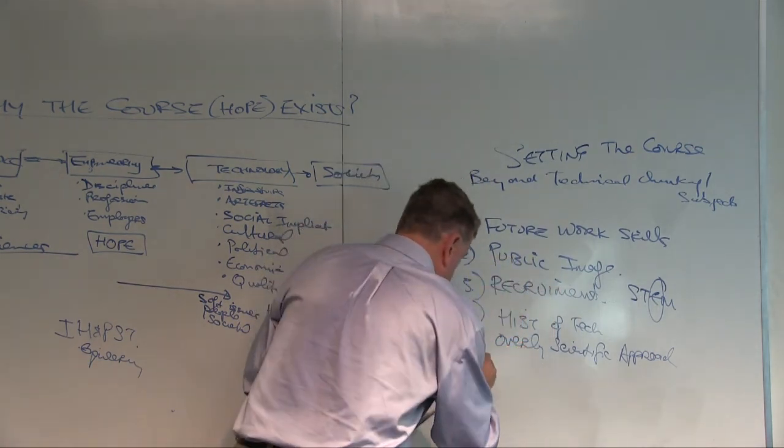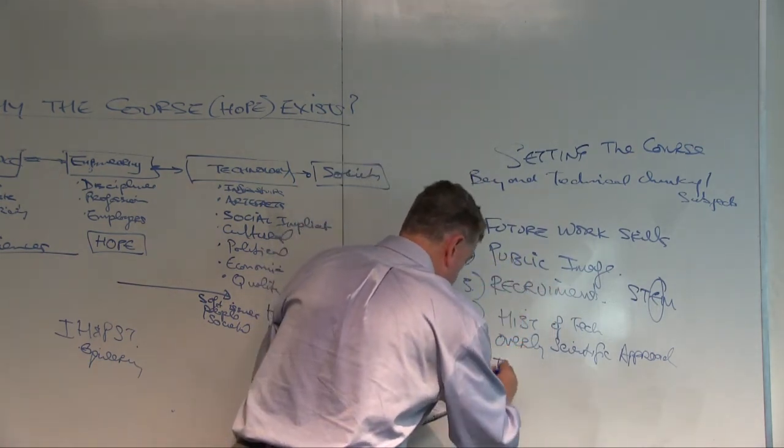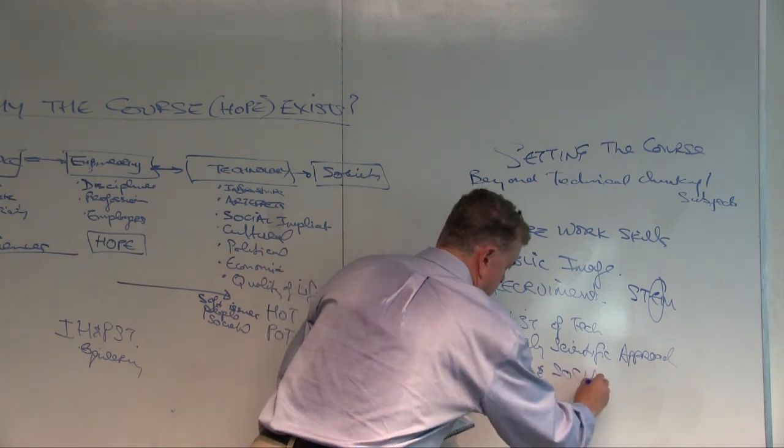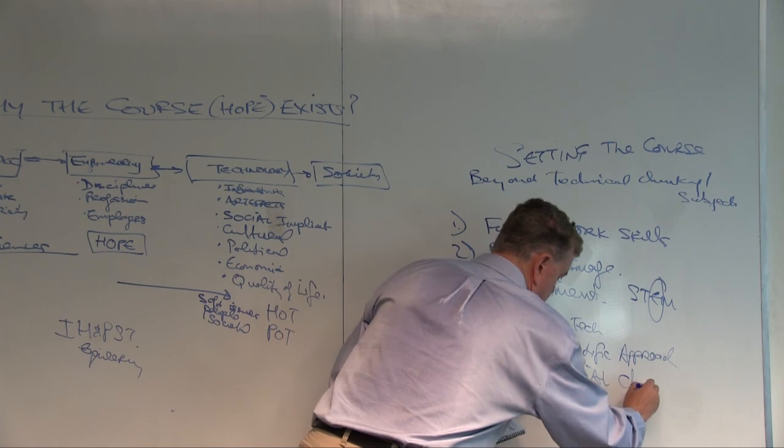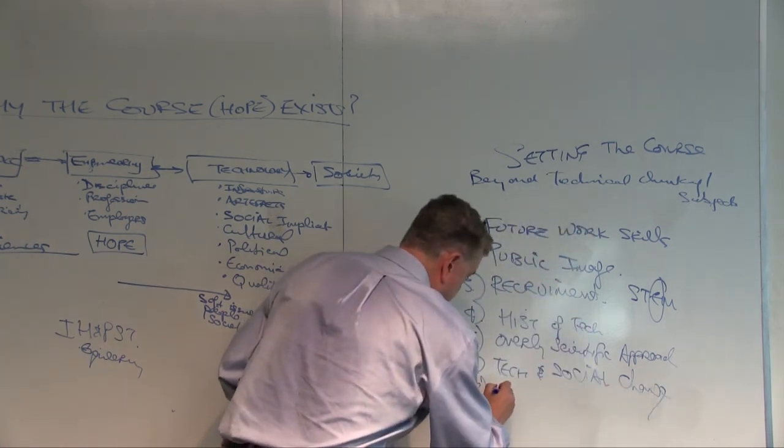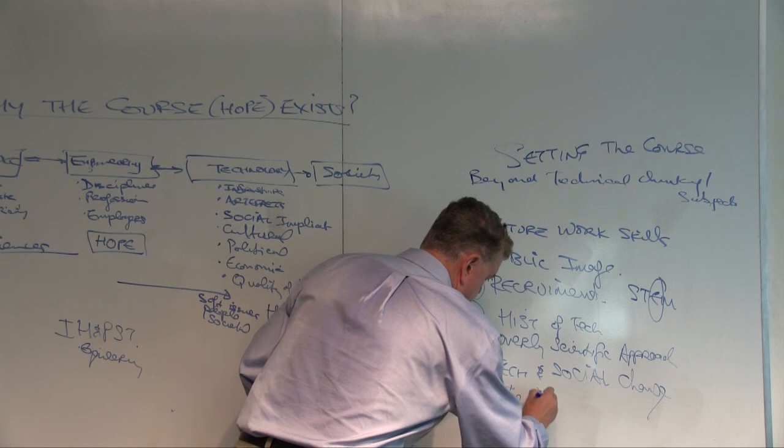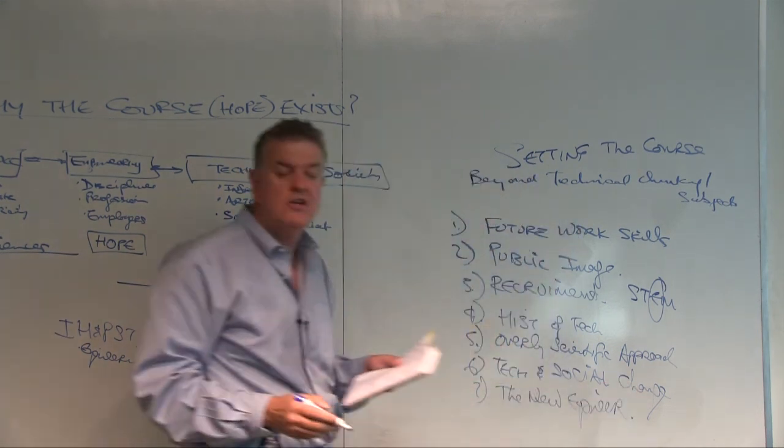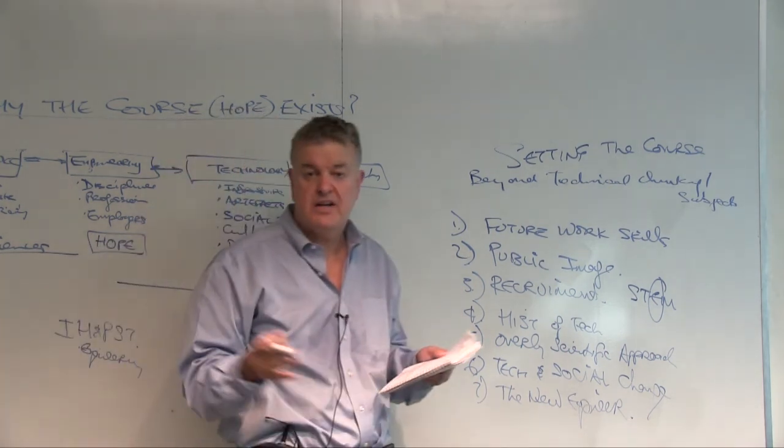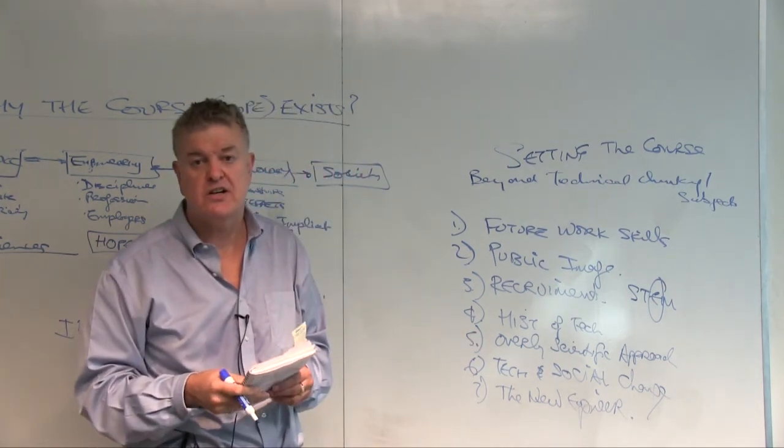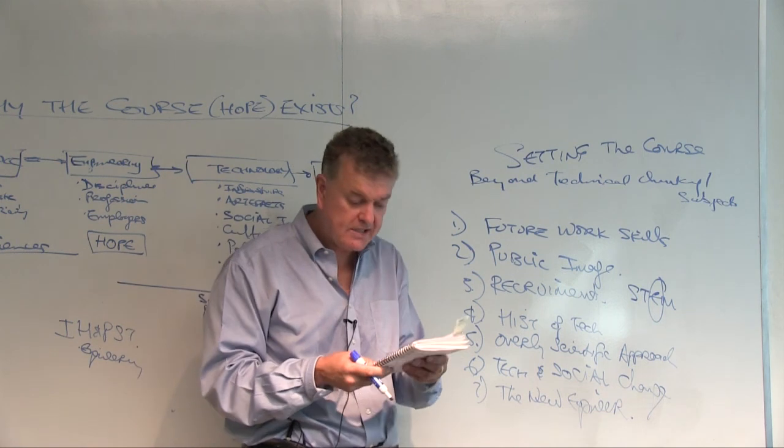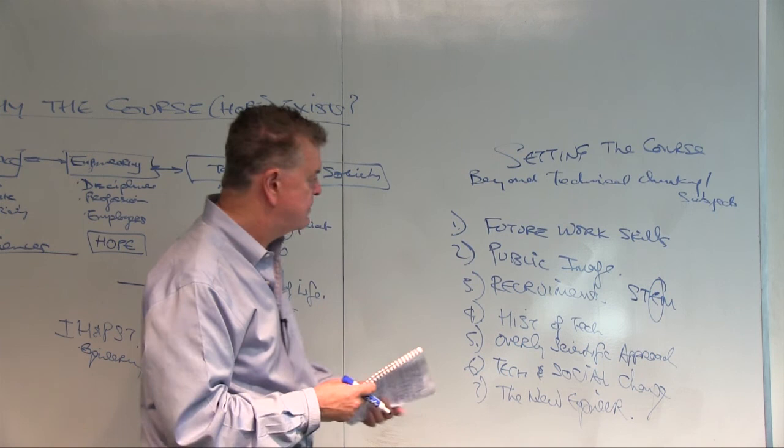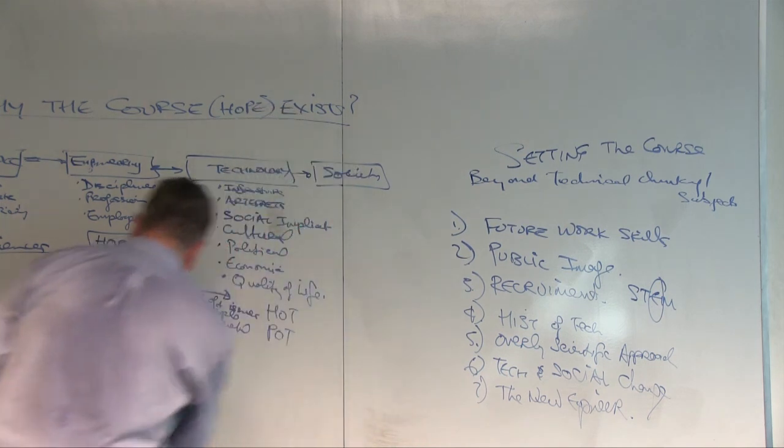And then we'll look at technology and social change. Tech and social change. And finally, today we'll wrap up with the new kind of engineer. And there's been some articles written recently in various magazines. One of them is the Professional Engineers Ontario Engineering Dimensions Magazine that calls for a Renaissance engineer. So, that sets the stage. So, let's go through each of these subjects. Thank you.